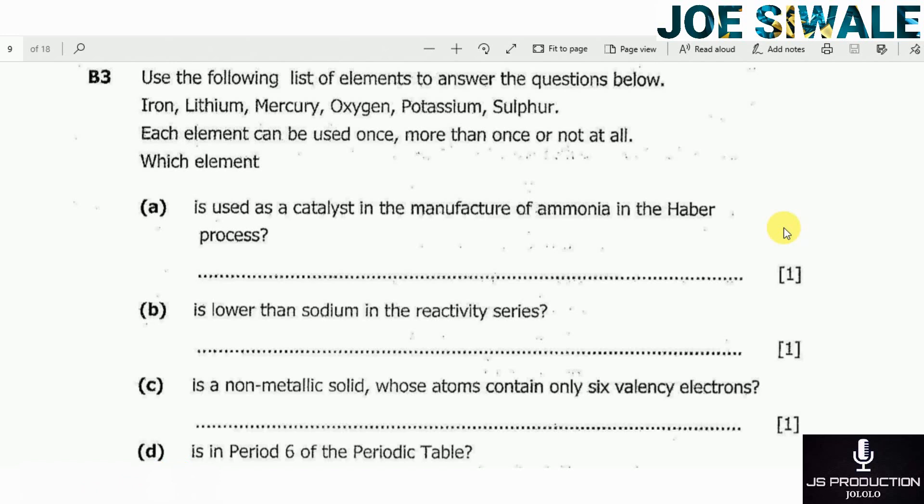Part A: is used as a catalyst in the manufacture of ammonia in the Haber process? So the element that is used as a catalyst in the manufacture of ammonia is iron.